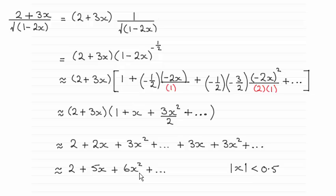And you can see how we do it. All we do is think of this as 2 plus 3x times 1 over the root of 1 minus 2x, which we then change to 1 minus 2x to the power minus a half.